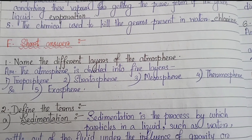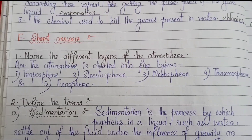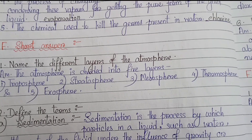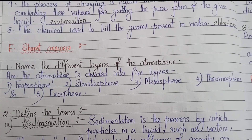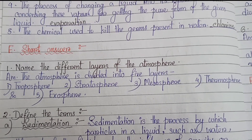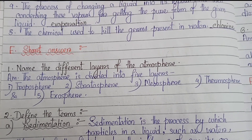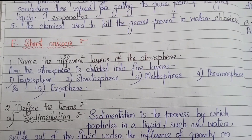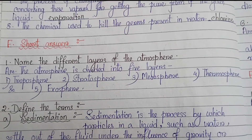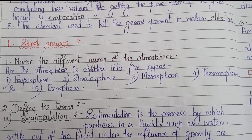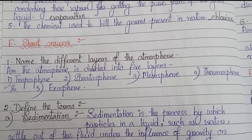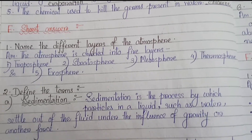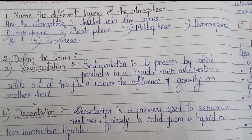Number 5: the atmosphere is divided into 5 layers. Number 1: troposphere. Number 2: stratosphere. Number 3: mesosphere. Number 4: thermosphere. And number 5: exosphere.